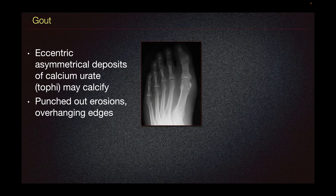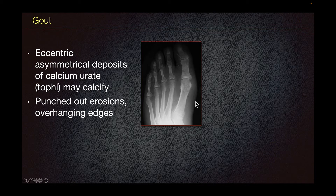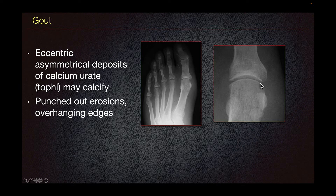On imaging, gout can present with eccentric asymmetrical deposits of calcium urate — tophi — that may calcify. Punch-out erosions and overhanging edges are typical characteristics of gout. For instance, at this first MTP joint, we can see some soft tissue swelling with some erosions at the margin. When we magnify this, we can see the typical punch-out erosion with overhanging edges.